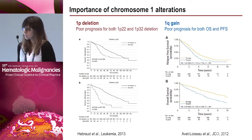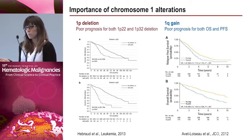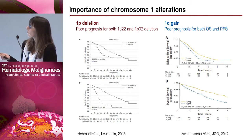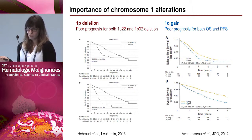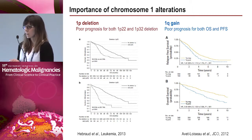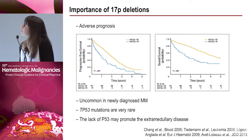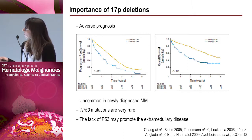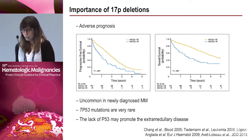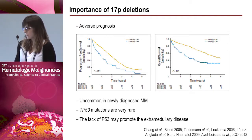Another important set of alterations involves chromosome 1. Deletion of 1p — both 1p22 and 1p32 — is a poor-prognosis alteration. Gain of 1q is also a poor-prognosis alteration affecting both overall survival and progression-free survival. Additionally, 17p deletion is an adverse-prognosis alteration affecting both overall survival and progression-free survival; it is uncommon at initial diagnosis and tends to appear during disease progression. Loss of TP53 may promote extreme disease, and TP53 mutations are rare in multiple myeloma.